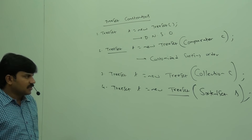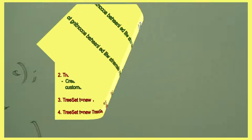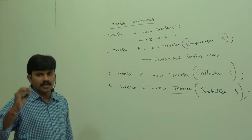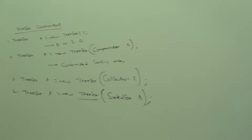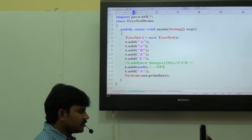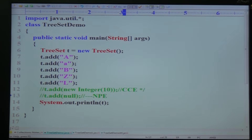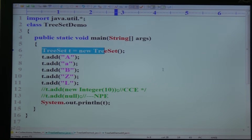Now let me convert this discussion into small examples so you can understand clearly. Here is TreeSetDemo.java — a simple example. We have import java.util.*, class TreeSetDemo, public static void main. TreeSet t = new TreeSet(). I am creating an empty TreeSet object.